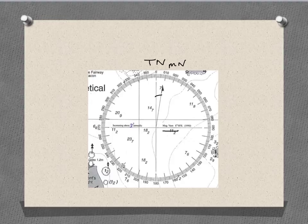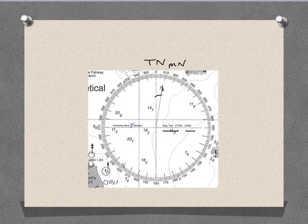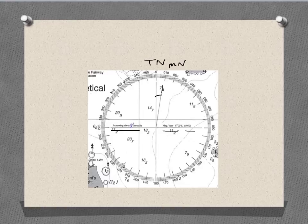The compass rose also gives us information that the magnetic variation is constantly changing. This map was made in 1990 and, as we can see, the magnetic variation was 8 degrees east. But the information on this side of the compass rose tells us that this variation is increasing 3 minutes annually. So a person using this map in 2010 would need to take this changing variation into account when taking their bearings.